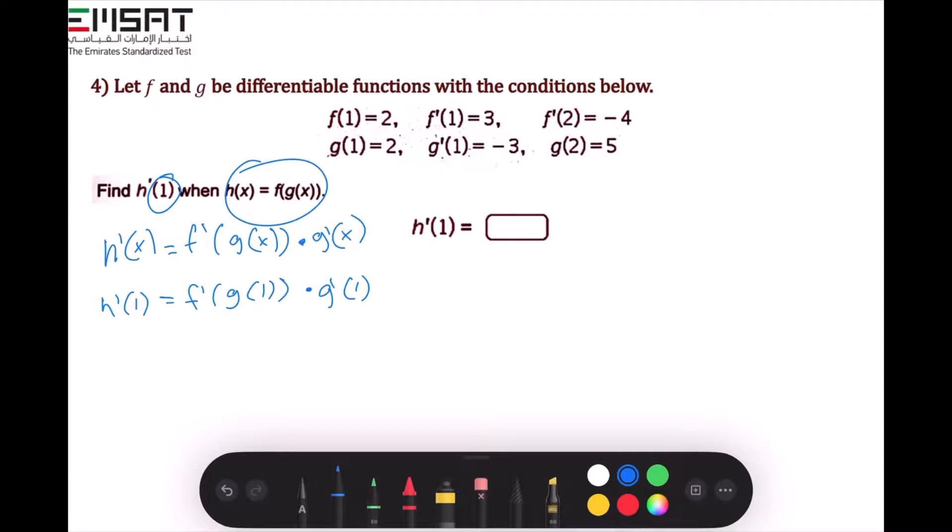So as it's given in this table, we'll just write this down first. g(1) is equal to 2. So this is going to be 2 times, and g'(1) is equal to negative 3.